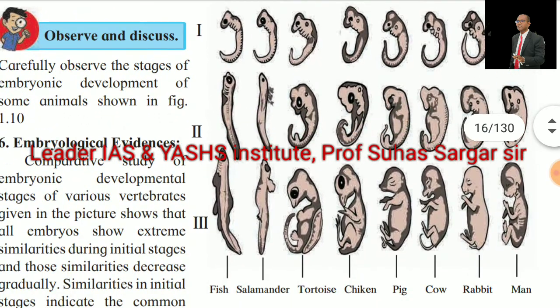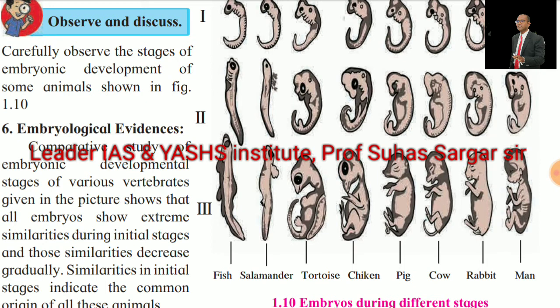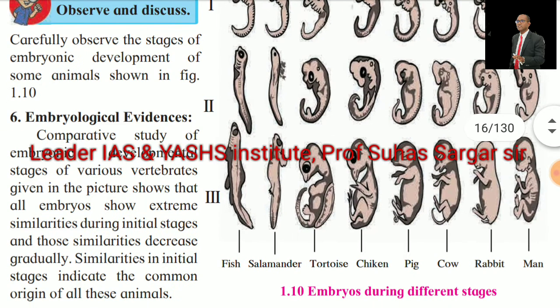Sixth, Embryological Evidences. See the picture of embryos during different stages. Comparative study of embryonic development stages of various vertebrates shows that all embryos show extreme similarities during initial stages, and those similarities decrease gradually. Similarities in initial stages indicate the common origin of all these animals.